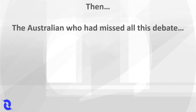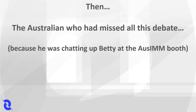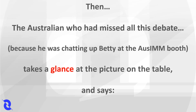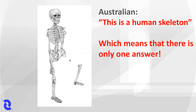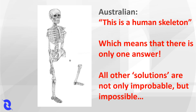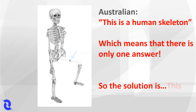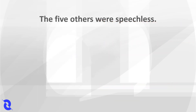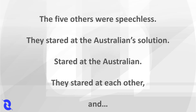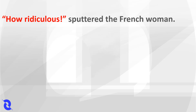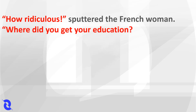Then the Australian, who had missed all of this debate because he was chatting up the barmaid — and there was only one at the bar — takes a glance at the picture on the table and said, "This is a given skeleton, which means that there's only one answer. All other solutions are not only improbable, but impossible. So the solution is this." The five others were speechless. They stared at the Australian solution, stared at the Australian, stared at each other, and burst into uncontrollable laughter. "How ridiculous," spoke the French woman. "Where did you get your education — not Fontainebleau?"